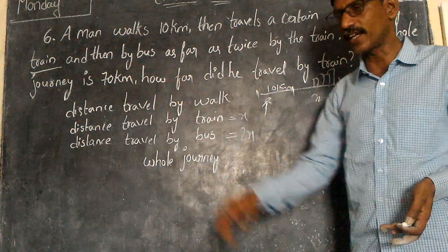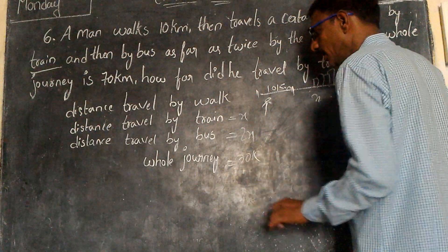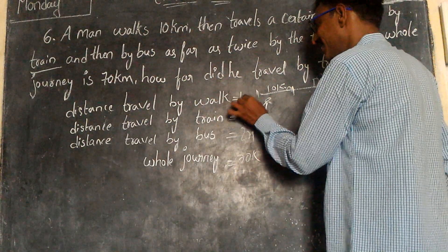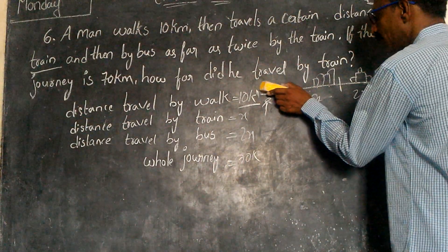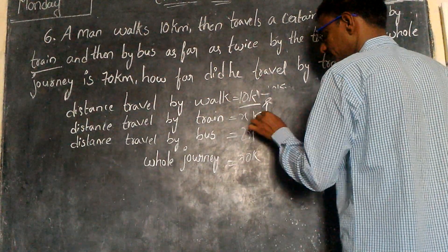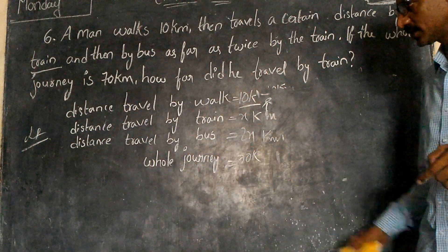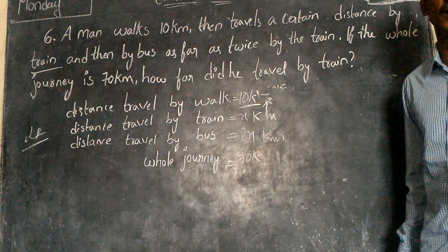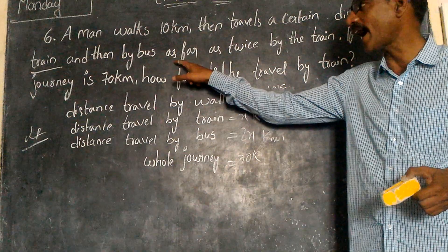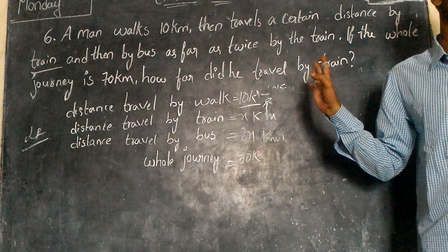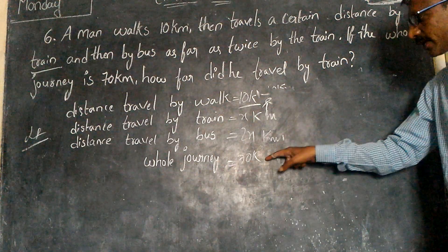The whole journey is 70 kilometers. The distance traveled by walk is 10 kilometers, by bus is 2x kilometers, and by train is x kilometers. Let the distance traveled by train be x. Therefore, distance traveled by bus is 2x, because twice is given. Adding walk, train, and bus gives the whole journey: 10 + x + 2x = 70.